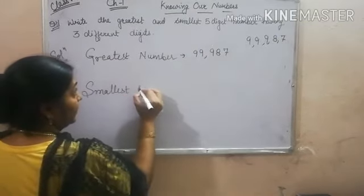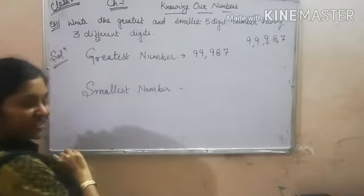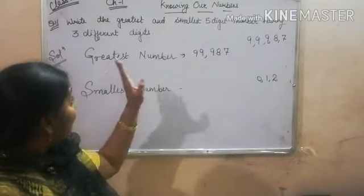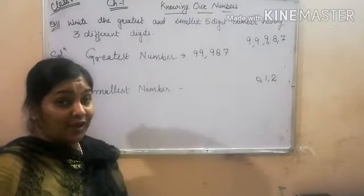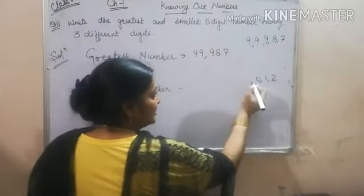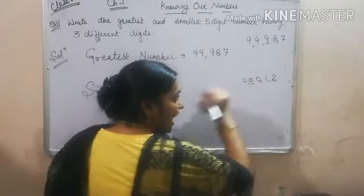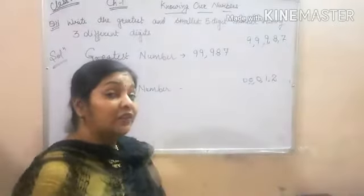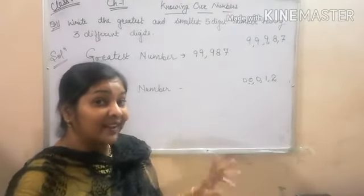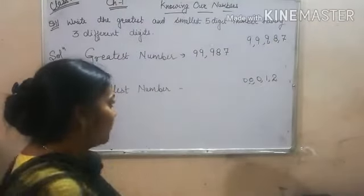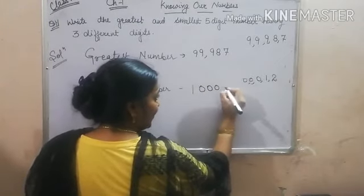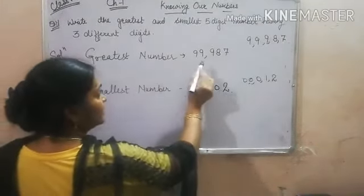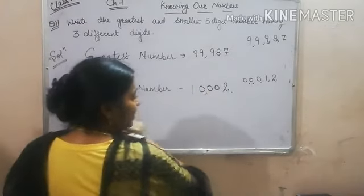For the smallest number, write the 3 smallest digits. Since you can repeat a digit, repeat the smallest digit 0 to get 5 digits. But no number can start with 0, so the starting digit will be 1. The number becomes 1, 0, 0, 2. So the greatest number is 99,987 and the smallest number is 10,002.